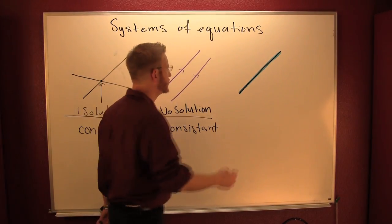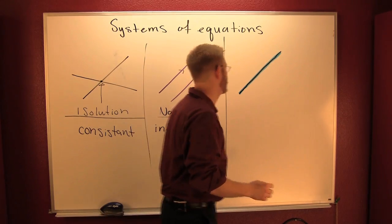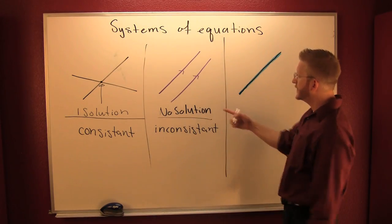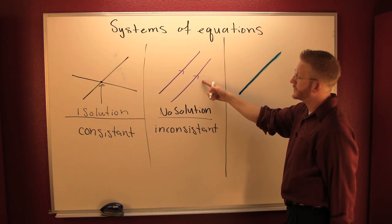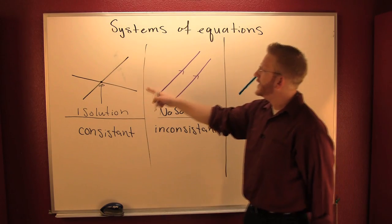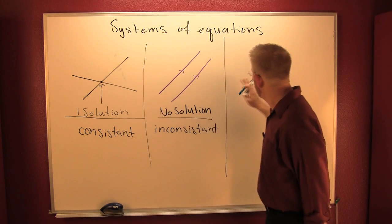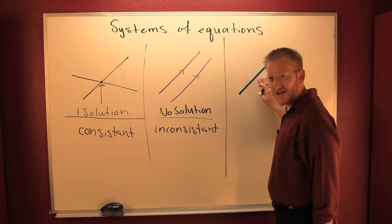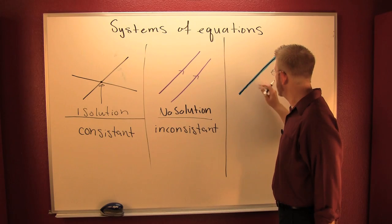Let's look at our third interaction. What if they agree everywhere? Very agreeable system. A system is consistent if it has at least one solution. This system seems to have an infinite number of solutions.